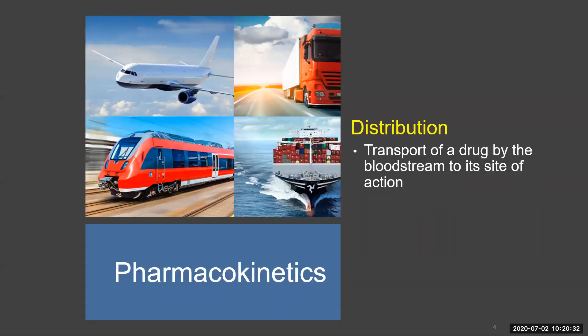The D is distribution — how is the drug going to be distributed throughout the body? What is the transport of the drug by the bloodstream to its site of action? Not every drug is distributed in the same way or in the same amount. Think of it like a cargo ship versus a truck — a cargo ship can transport a huge volume of goods, while a truck can only hold one container. Similarly, sometimes a large amount of drug can be distributed, and sometimes only a little.